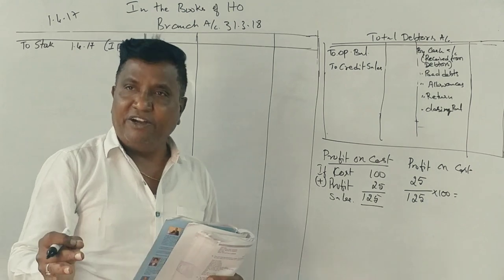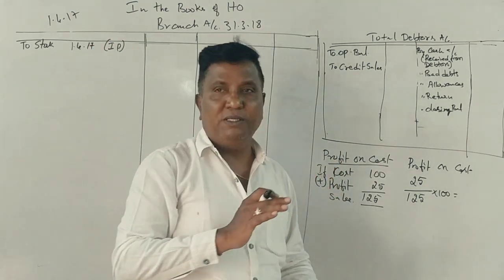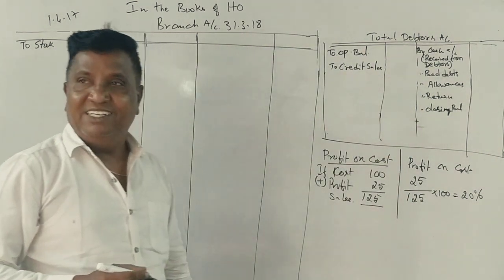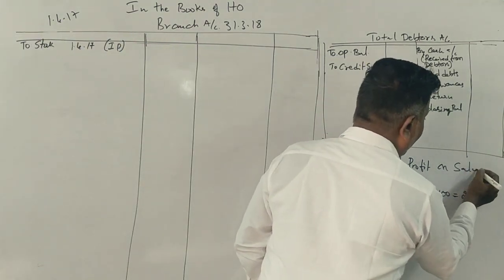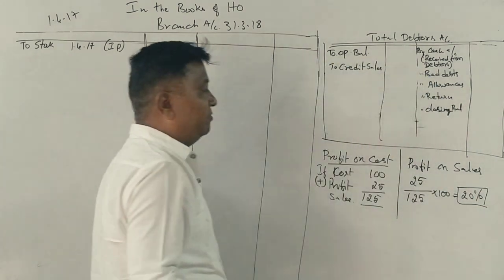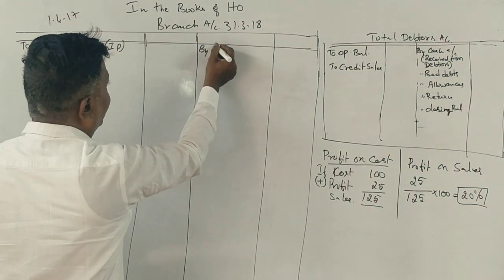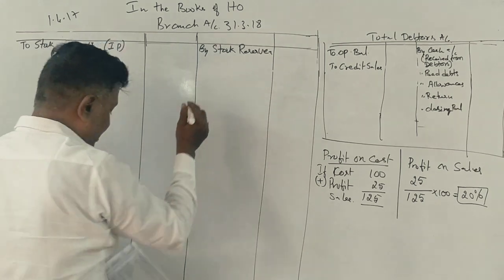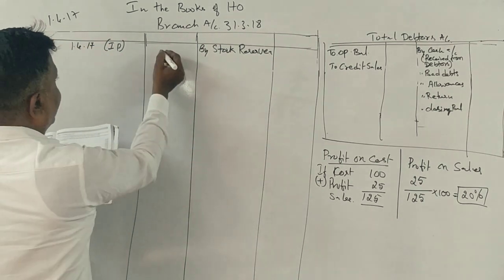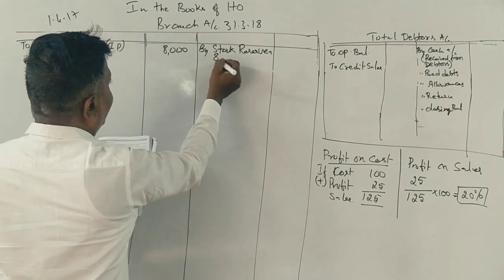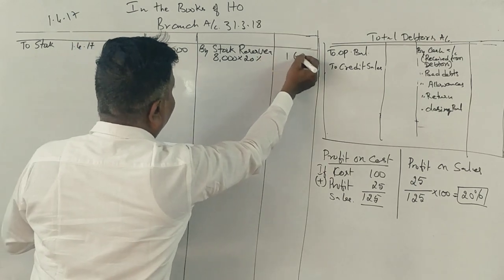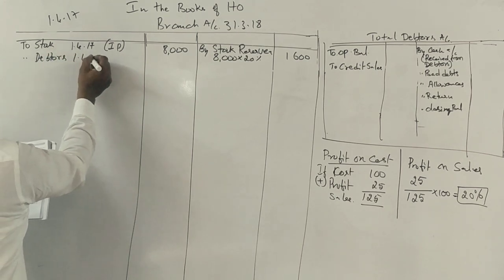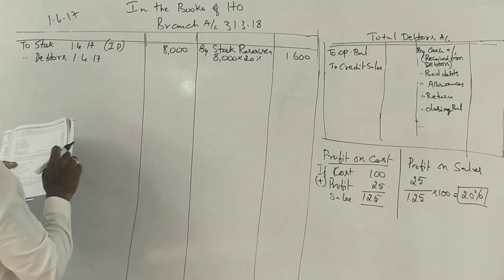The opening stock on 1-4-17 is 5,200 at invoice price. We need to transfer 20% to the stock reserve account. Twenty percent of 5,200 is 200. Wait, let me recalculate. The stock is 8,000. Twenty percent of 8,000 is 2,600. Actually, the opening stock is 5,200.